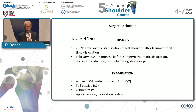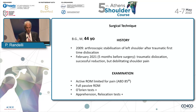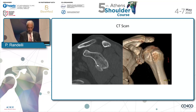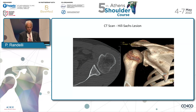A couple of cases just to show you why it's so important. This is a guy, 44 years old. He was treated in 2009 with arthroscopic stabilization of the left shoulder after traumatic first-time dislocation. In February 2021 — so 12 years after, and I didn't do the first procedure — he had a traumatic dislocation with a debilitating shoulder, limited active range of motion for pain, and positive O'Brien, apprehension, and relocation tests. That's the CT scan. You can see the previous surgery and the humeral head defect.